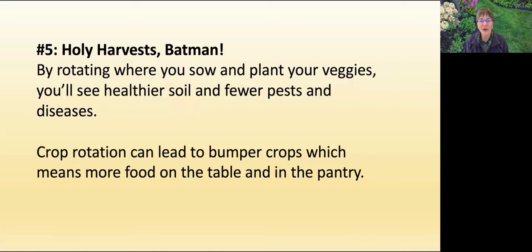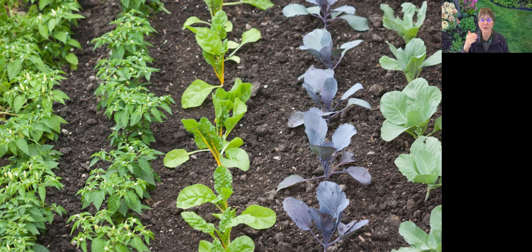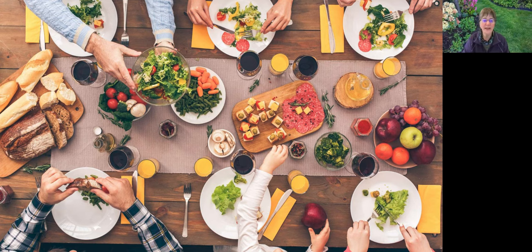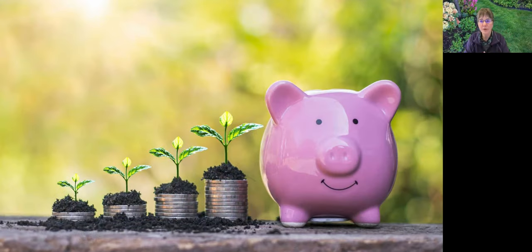And finally, number five: holy harvests, Batman! By rotating where you sow and plant your veggies, you'll see healthier soil and fewer pest diseases. Crop rotation can lead to bumper crops, which means more food on the table and in the pantry. Plus, you'll have more control over what's in your food and enjoy lower food costs. In my few decades of life on this planet, I have never seen food prices go down.